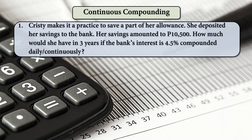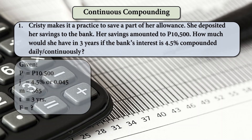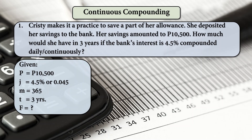For example, Christy makes it a practice to save a part of her allowance. She deposited her savings to the bank. Her savings amounted to 10,500 pesos. How much would she have in 3 years if the bank's interest is 4.5% compounded daily or continuously? Given: P is 10,500, J is 4.5%, M is 365 since daily or continuously, and T is 3 years.